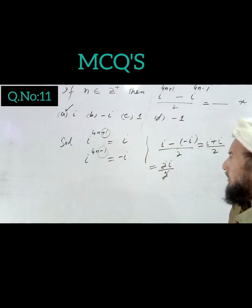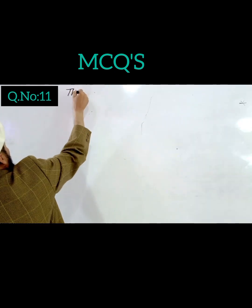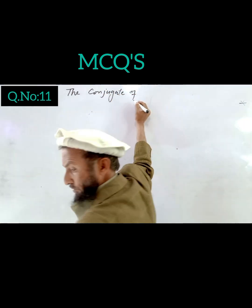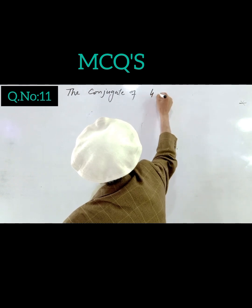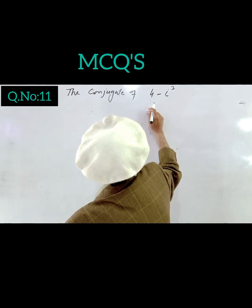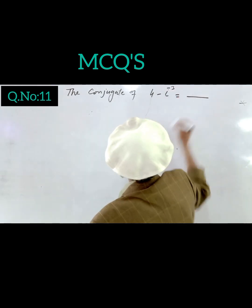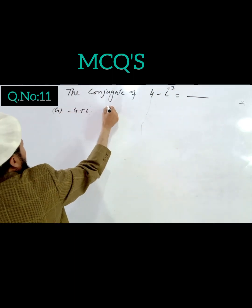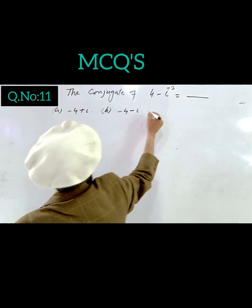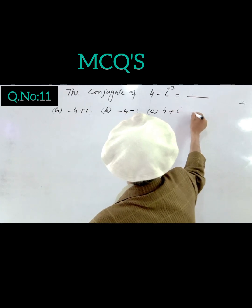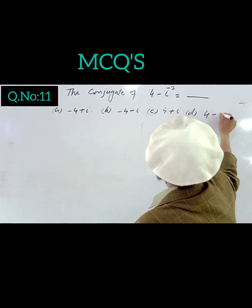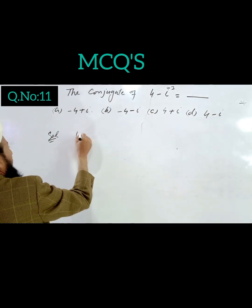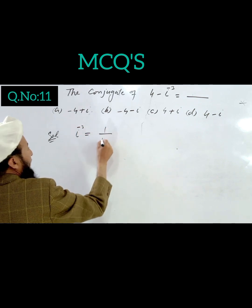Question 12: Simplify minus iota cubed minus 3. The options are: A) minus 4 plus iota, B) minus 4 minus iota, C) 4 plus iota, D) minus iota. We first simplify minus iota cubed.